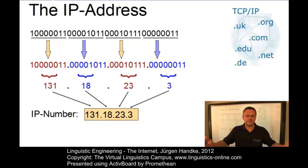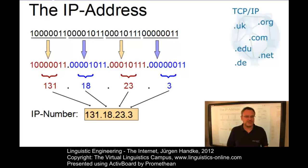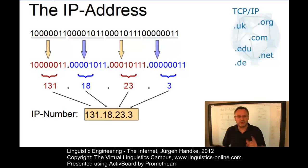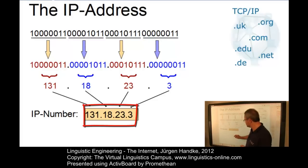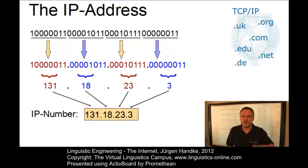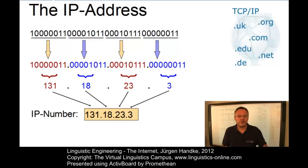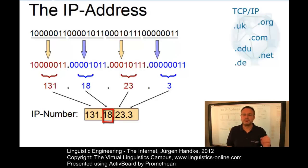This is how it is interpreted. The largest network is indicated by the first number. The first subnet is indicated by the second number, and so on. The last number on the right-hand side indicates the computer number in the last subnet. So if a router has to send a packet to this IP number, all the router has to know is how to send the packet to the network with number 131. The router at network 131 will know how to get the packet to subnet 18, and eventually the packet will reach computer number 3 within subnet number 23.